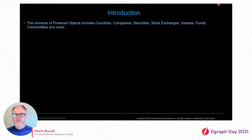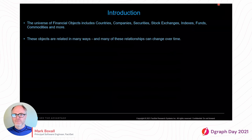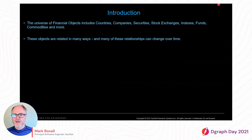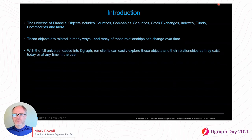The universe of financial objects includes things like countries, companies, securities, stock exchanges, indexes, funds, commodities, and a lot more. These objects are related in many different ways, and many of these relationships can change over time. With the universe loaded into DGraph, clients can now easily explore these objects and their relationships as they exist today or at any time in the past.